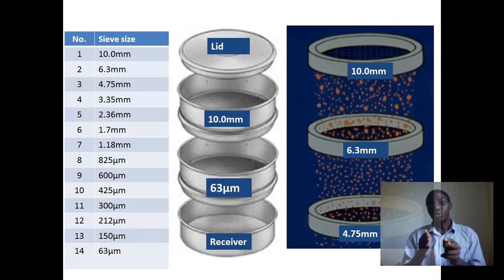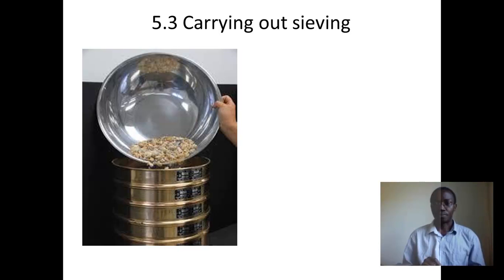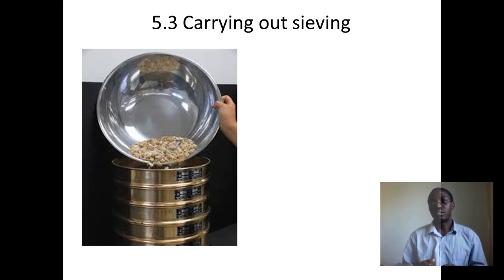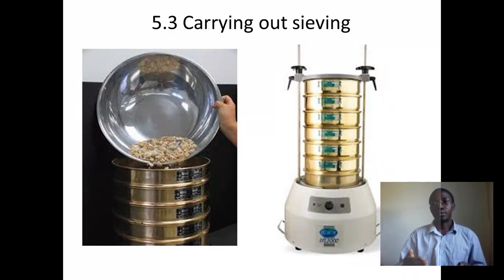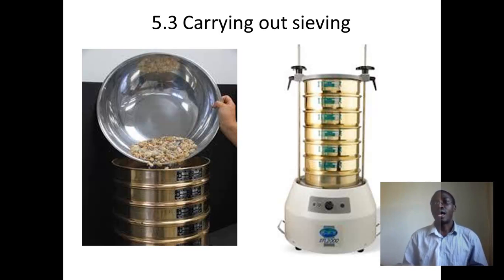There is a lid on top of sieve 10 mm and a receiver at the bottom of sieve 63 micrometers. The dry 1,200-gram representative sand sample is placed on the topmost sieve (sieve 10 mm) and covered with the lid. If a sieve shaker is to be used, the set of sieves is tightly secured on the sieve shaker and the machine is set to shake the sieves containing the sand sample for about 15 minutes.